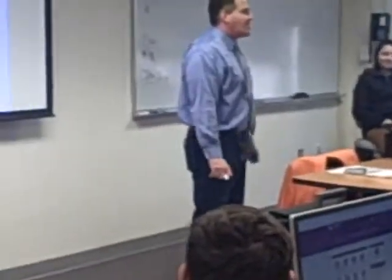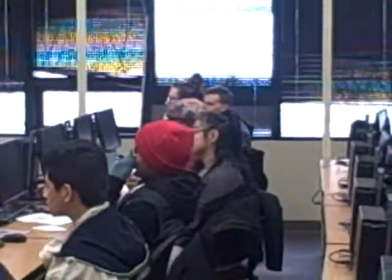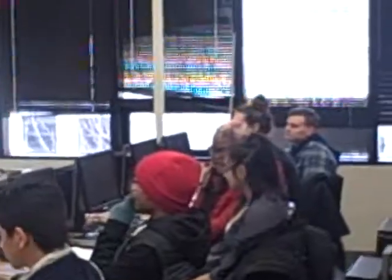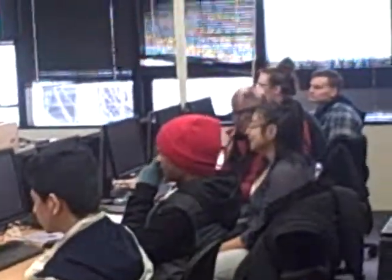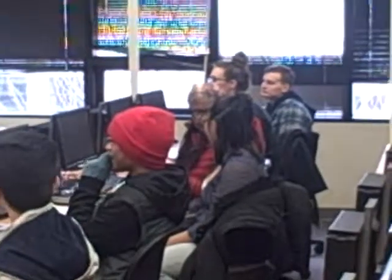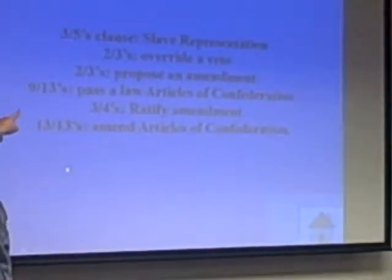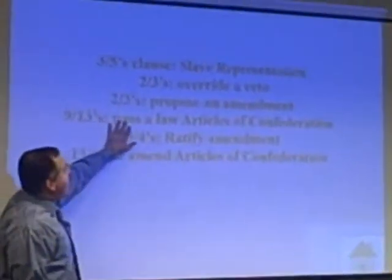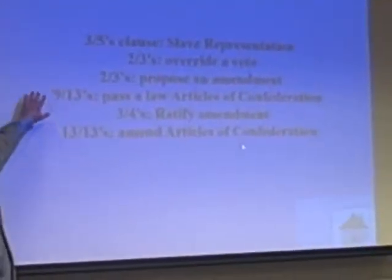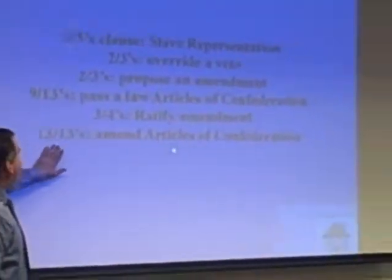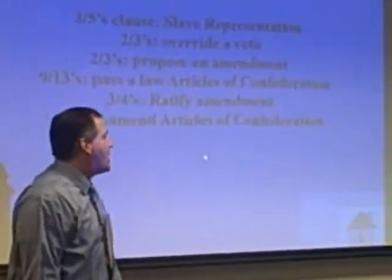What did you need to actually amend the Articles of Confederation? 13 out of 13 — it had to be unanimous. What did you need to ratify the Constitution? Nine out of 13. So: nine-thirteenths to pass a law; two-thirds to override a veto and propose an amendment; three-fifths clause for slaves; three-quarters to ratify a constitutional amendment; and 13-thirteenths to amend the Articles of Confederation.